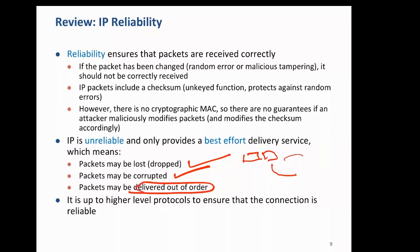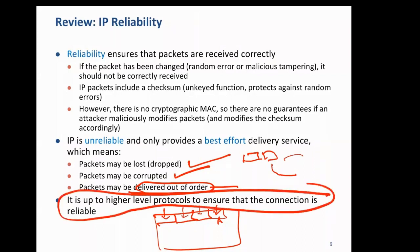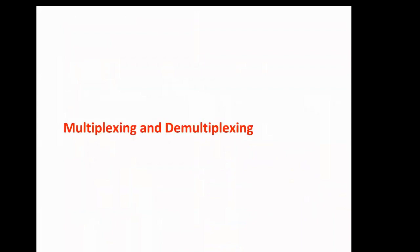This out-of-order delivery is an issue because a file must be reassembled back in the correct order. There must be some way to reassemble them. IP does not guarantee any of these things, so it is left to higher-level protocols to ensure a reliable connection. Some applications like streaming may tolerate dropped packets, but most applications today — even most OTT streaming — use TCP.